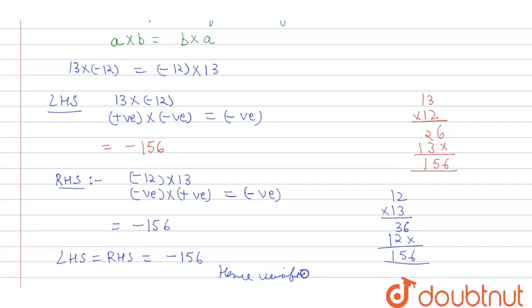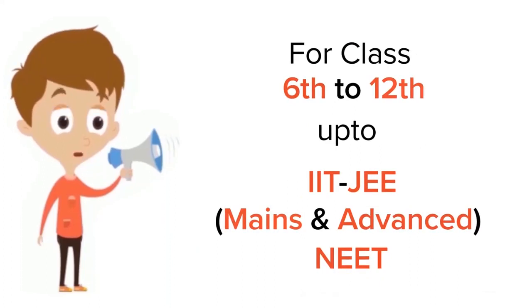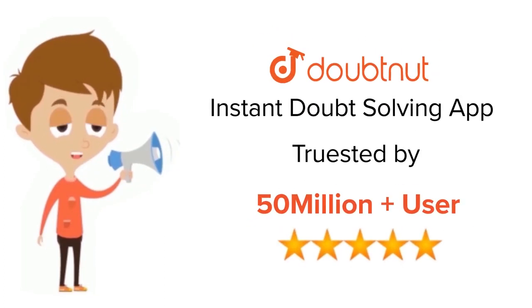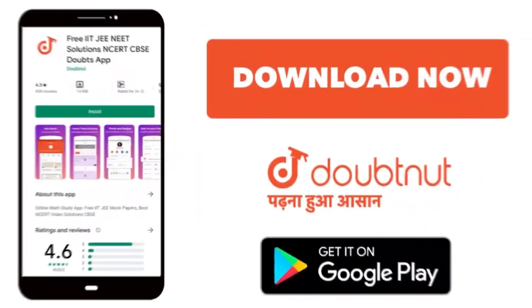Commutative property is being used here. Thank you. For class 6th to 12th, IIT-JEE and NEET level, trusted by more than 5 crore students. Download Doubtnut app today.